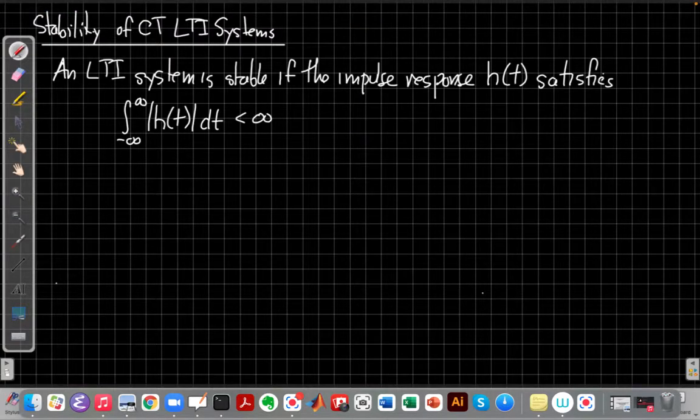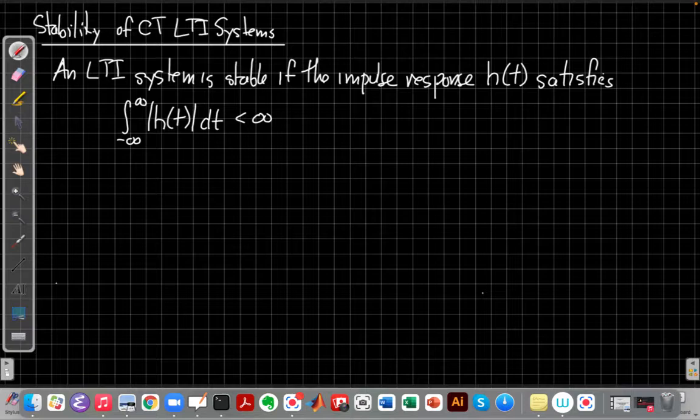So as that equation shows, the integral of the absolute value of H of T over all time from minus infinity to plus infinity has to be finite. We could go through and derive this. I might do that in a separate video, but I thought a higher priority would be to show you how we use this in practice with a couple examples. And then if there is time later, I'll make another video showing how this condition results from our standard definition of stability for any system.